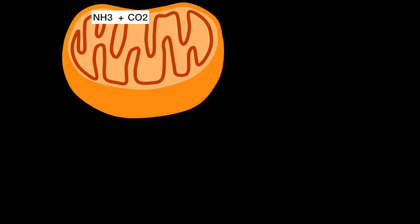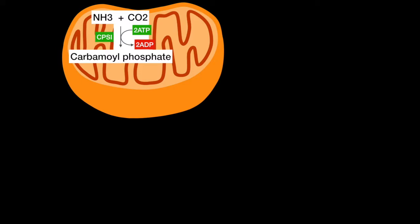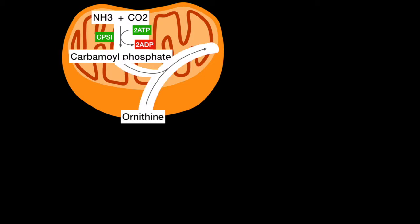In the mitochondria, the nitrogen waste and carbon dioxide combines with energy from 2 ATP into carbamoyl phosphate by carbamoyl phosphate synthetase 1. The end product of the urea cycle is ornithine, and it combines with carbamoyl phosphate into citrulline by ornithine transcarbamylase.